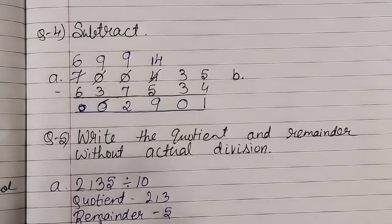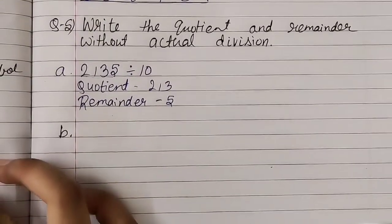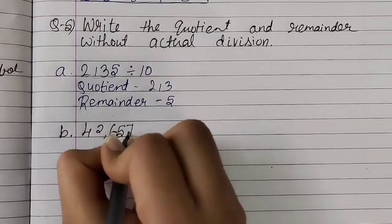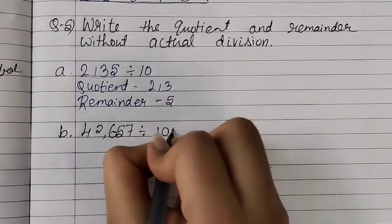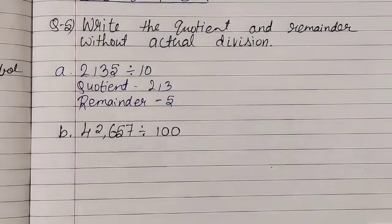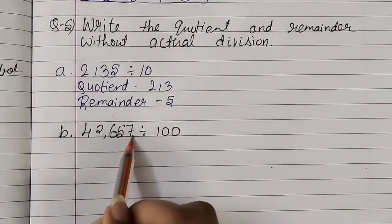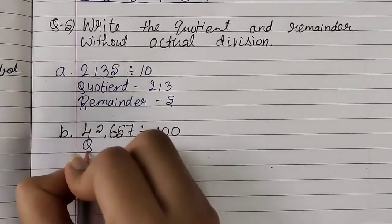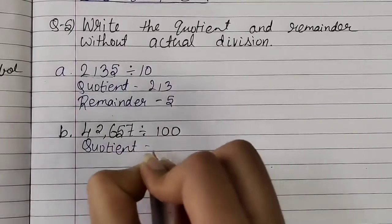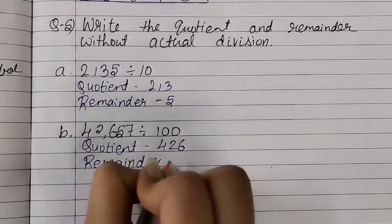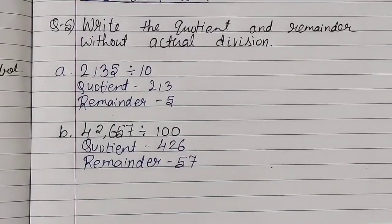Number (b): 42,657 divided by 100. 100 has 2 zeros, so the last 2 digits — 5 and 7, i.e., 57 — are our remainder. The remaining digits — 426 — form our quotient. So quotient is 426 and remainder is 57. Number (c): 6,874 divided by 10. 10 has 1 zero, so the last digit — 4 — is our remainder, and the remaining digits — 687 — are our quotient. So quotient is 687 and remainder is 4.